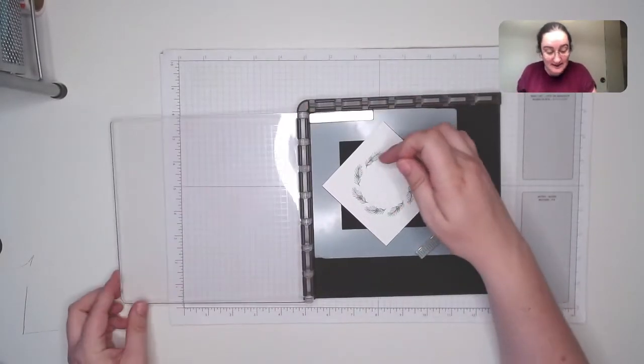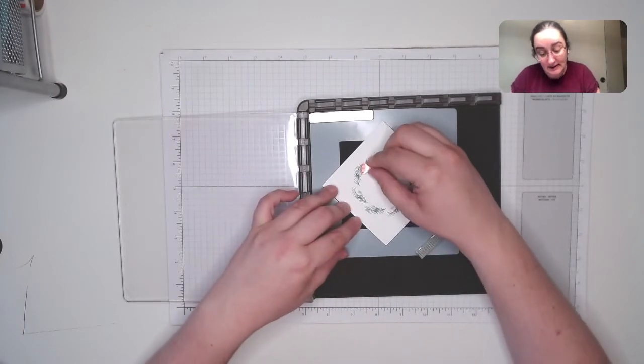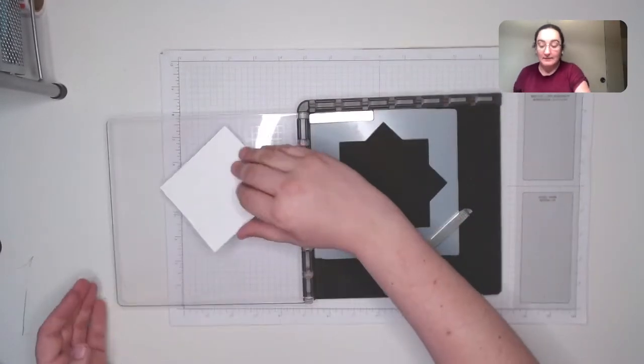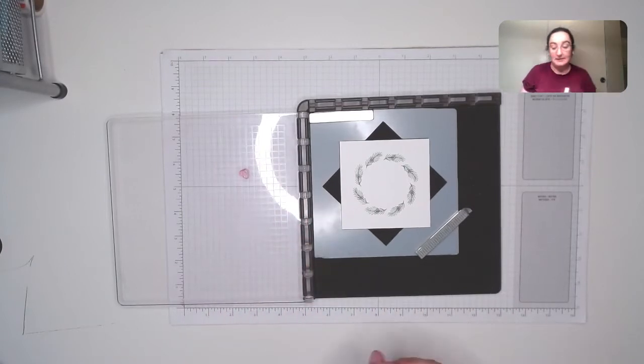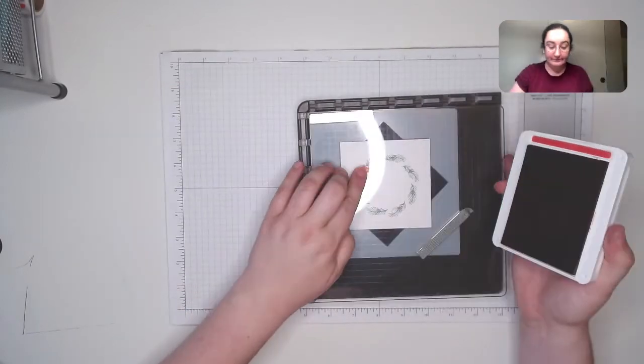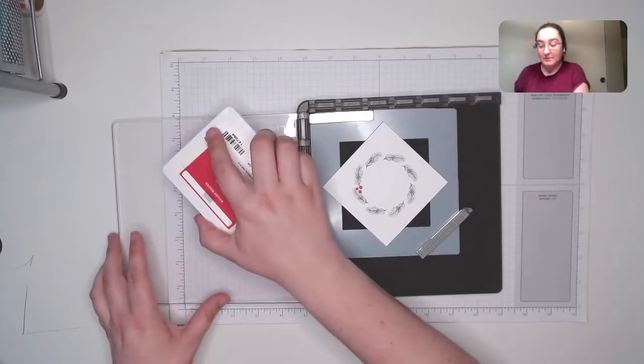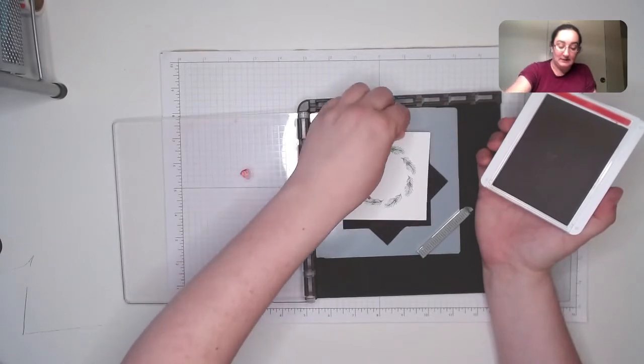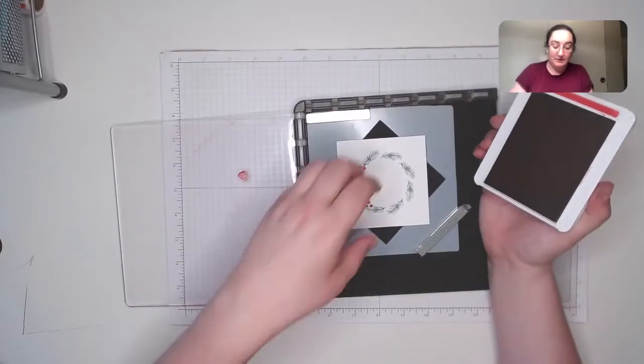And what we're going to do is we're going to fill in, see how there's some gaps with this stamp, and that's just the way this stamp set is designed. I'm going to put in these little holly berries. So we're going to put those in, and then we're going to stamp these in real red. So again, we're just going to go around an eighth of a turn each time.